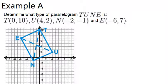In example A, it says determine what type of parallelogram TUNE is, and it gives us the coordinates for T, U, N, and E, as well as a graph of those points.